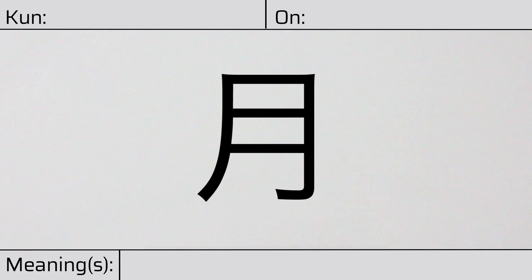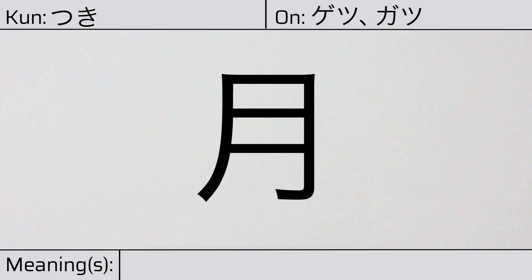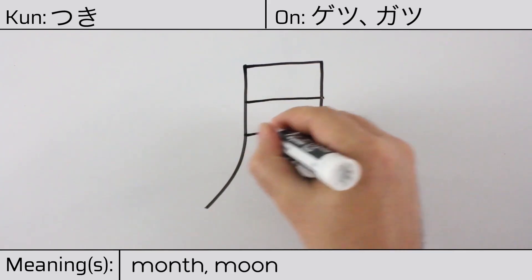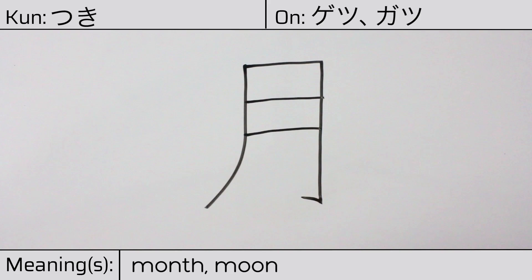Welcome to this lesson on Japanese kanji. Today, we'll be discussing this character. This kanji has kunyomi or Japanese reading of tuki, and it has onyomi or Chinese readings of getzu, getsu, or gatsu. This character has the meanings month or moon. Here is the stroke order. This character has no radicals, but is itself a radical in many composite kanji.